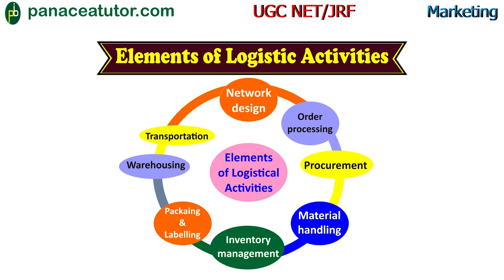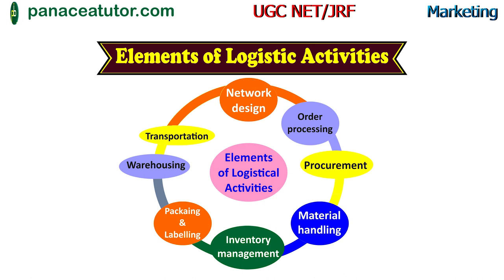The last element is procurement. Procurement is concerned with purchasing and arranging inbound movement of materials, parts, or finished inventory from suppliers to manufacturing. We obtain raw materials or borrowed parts from the supplier — this complete stage is known as the procurement stage. These were the elements of the logistic activities.